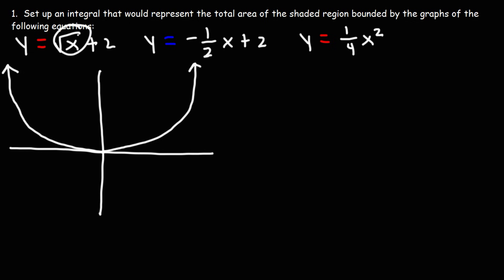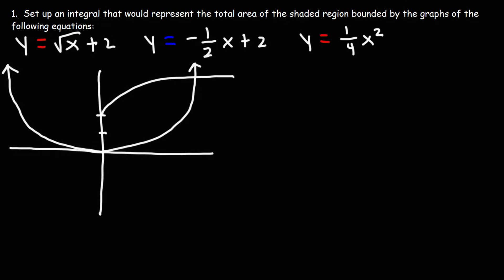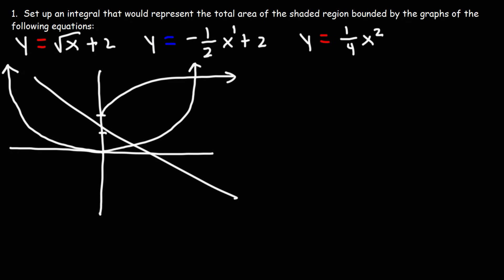The graph y equals square root of x looks like the standard shape, but it's been shifted two units up. So it's going to start from positive two and then gradually go in that direction. Now the graph in the middle has x to the first power, so we're dealing with a straight line, and we have a negative in front of that x term, so that's going to be a line going in a downward direction. When x is zero, we can see y is two.